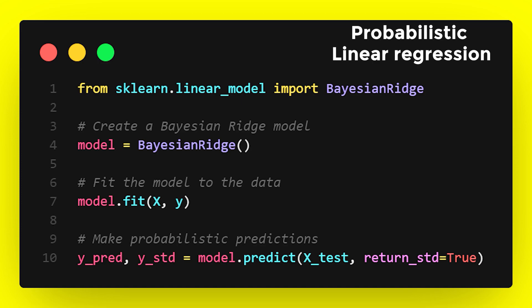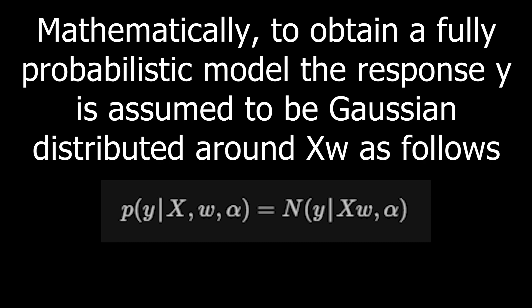Mathematically, to obtain a fully probabilistic model, the response Y is assumed to be Gaussian distributed around XW. One of the most useful types of Bayesian regression is Bayesian Ridge regression, which estimates a probabilistic model of the regression problem.